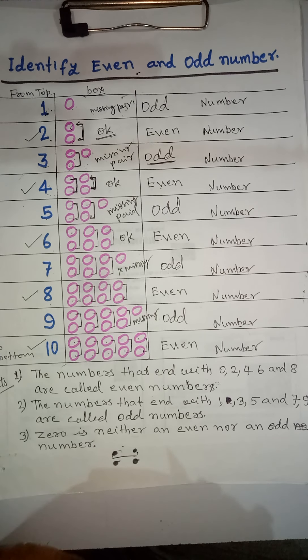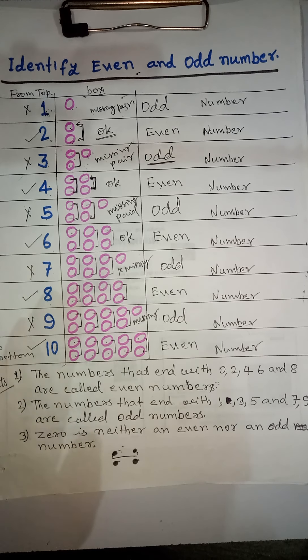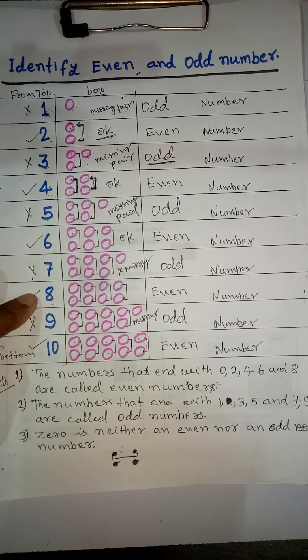Second fact: the numbers that end with 1, 3, 5, 7, or 9 will always be odd numbers. So 1, 3, 5, 7, and 9 are all odd numbers. Each of 1, 3, 5, 7, 9 are odd numbers.